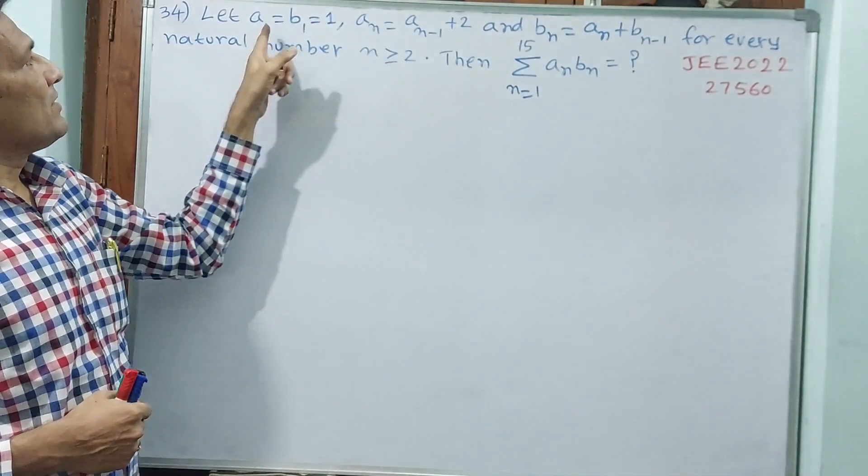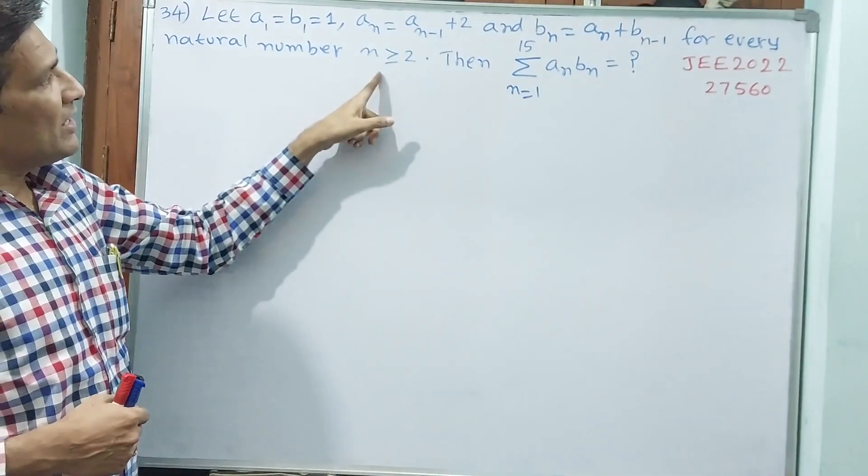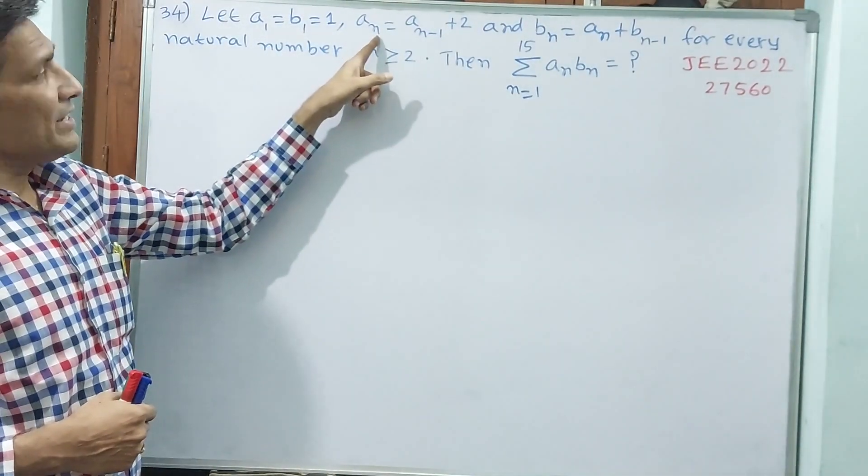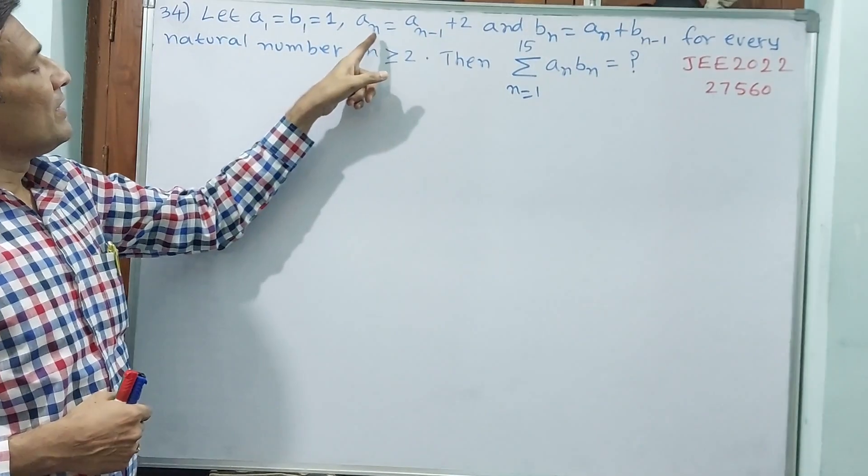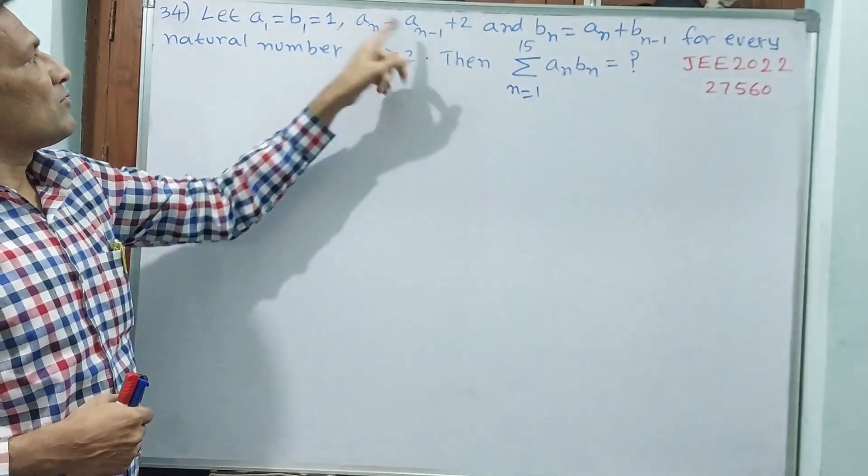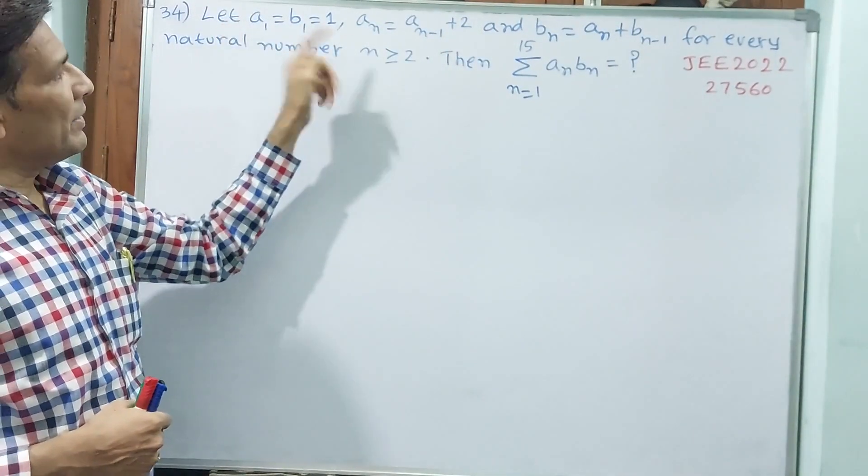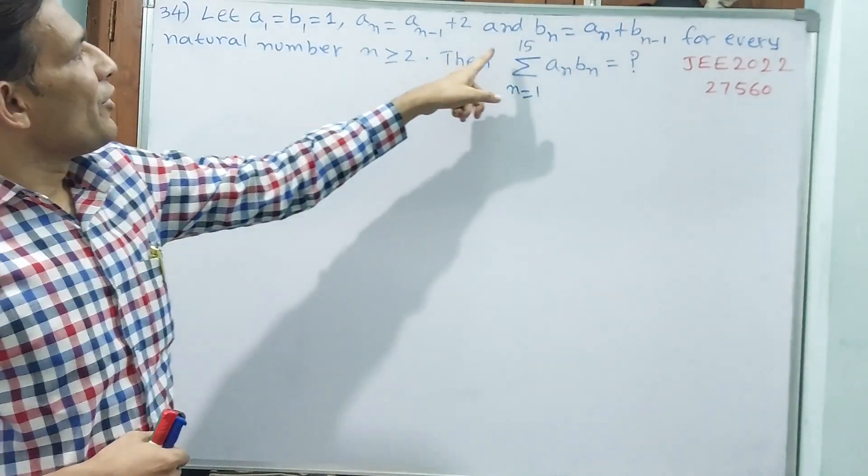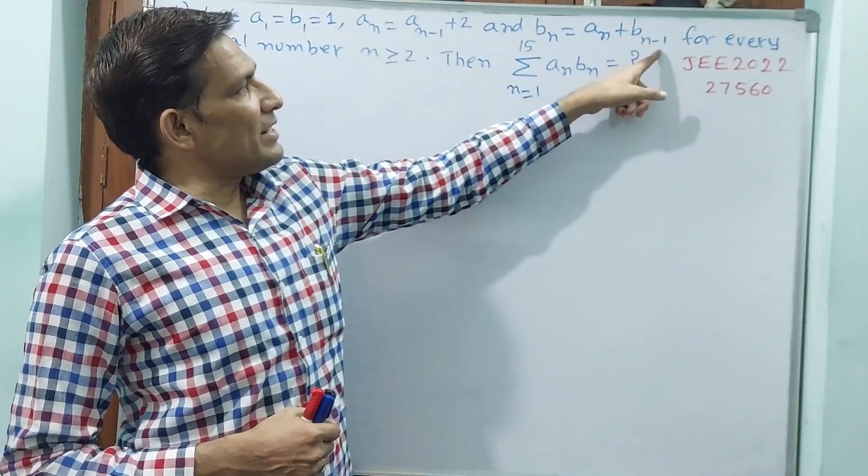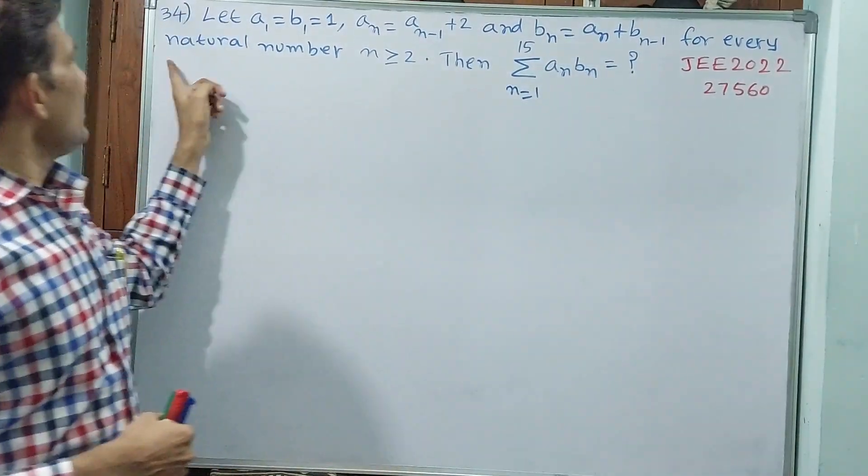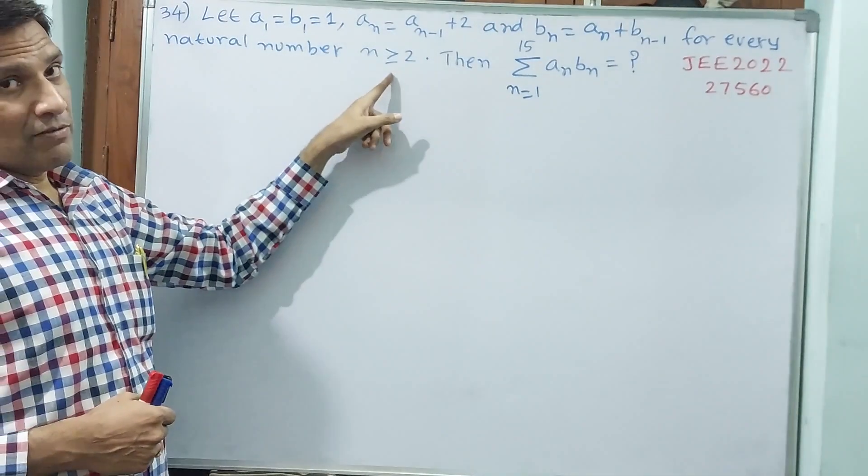See, a_n they have written, but a_n should not be 1. That is why they have given here, because if a_n is 1 then automatically a_0 plus 2 has to come and we don't know a_0, because n starts on 2 and above. b_n is a_n plus b_(n-1) for every natural number n is greater than or equal to 2.